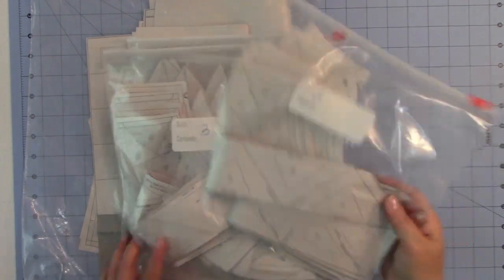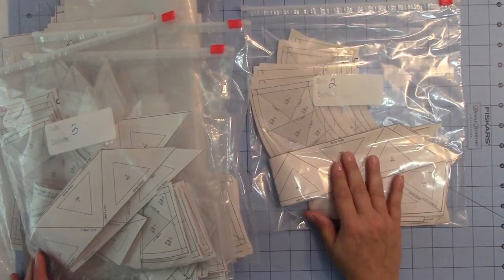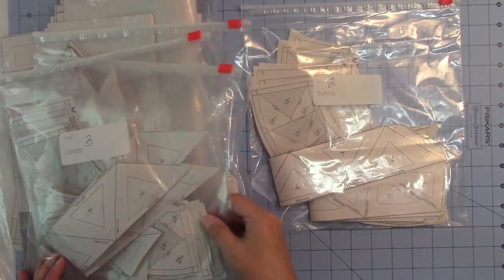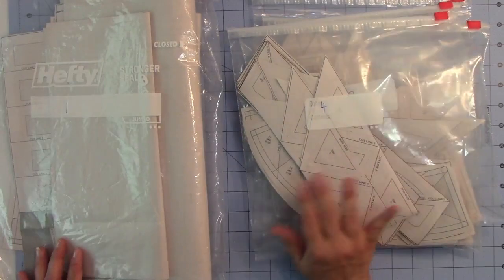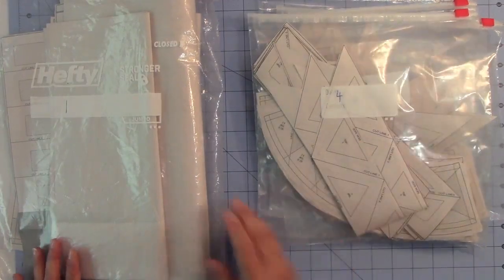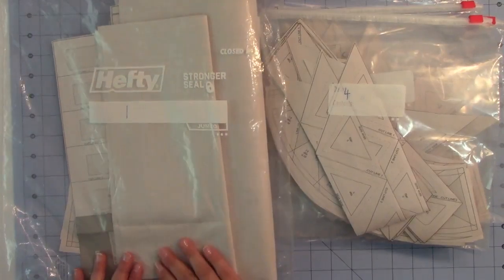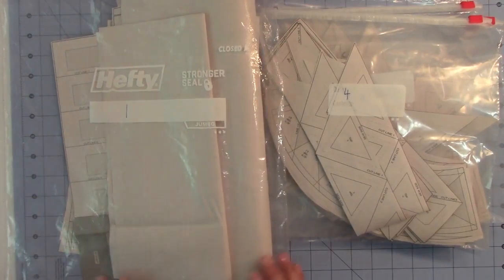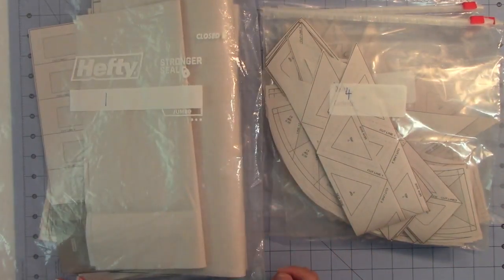So these are what your bags look like once all of your templates and units are cut and put into the bags. Bags two through five are smaller because they have smaller pieces and less fabric, and bag one is the jumbo bag because it has to hold a lot of fabric. So this is what they look like once everything is cut, and now it's ready for the fabric.